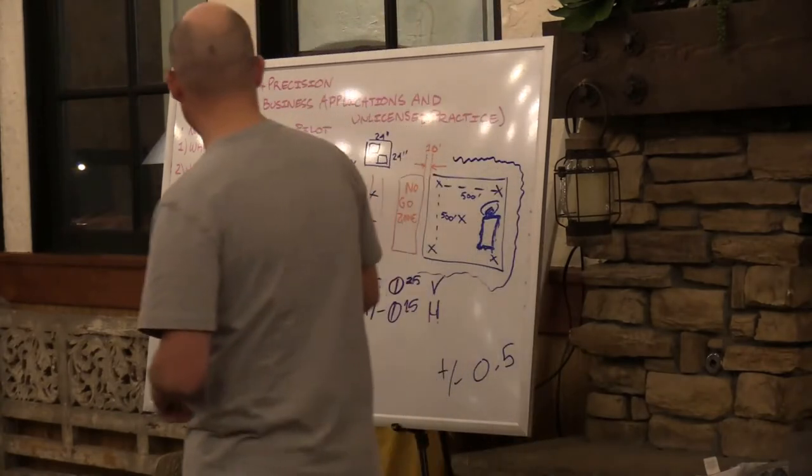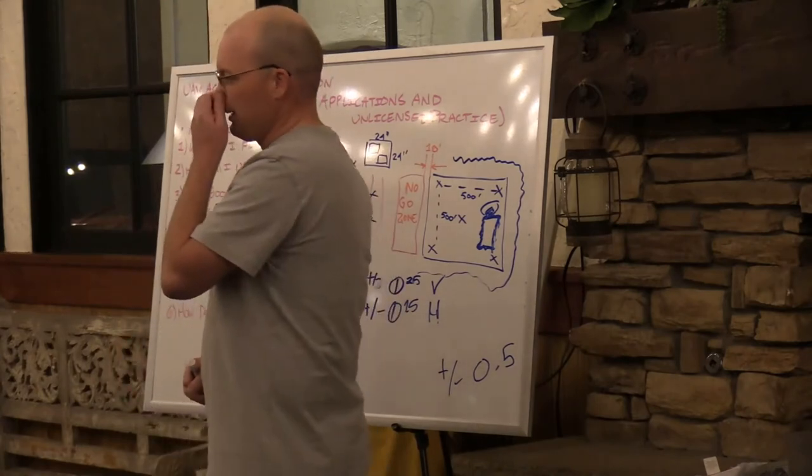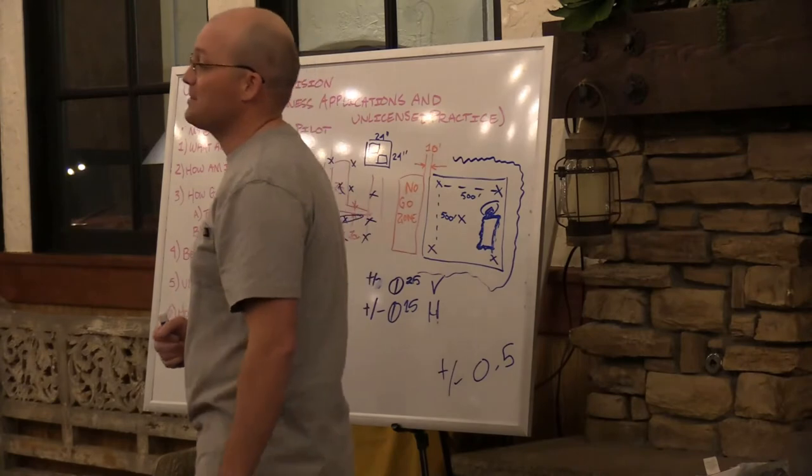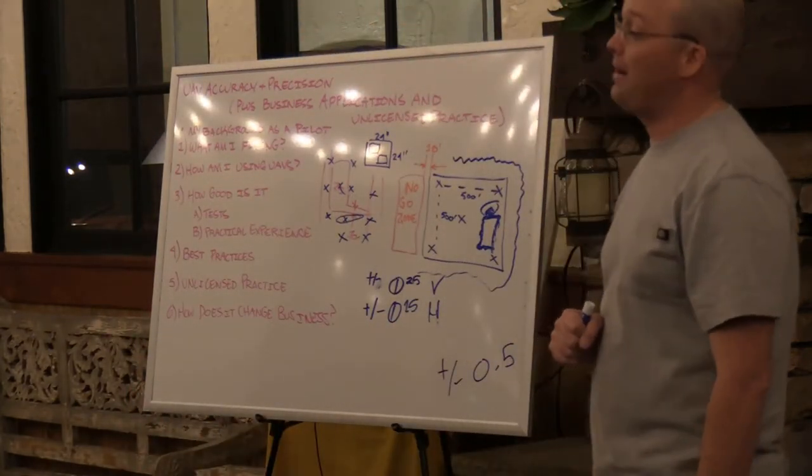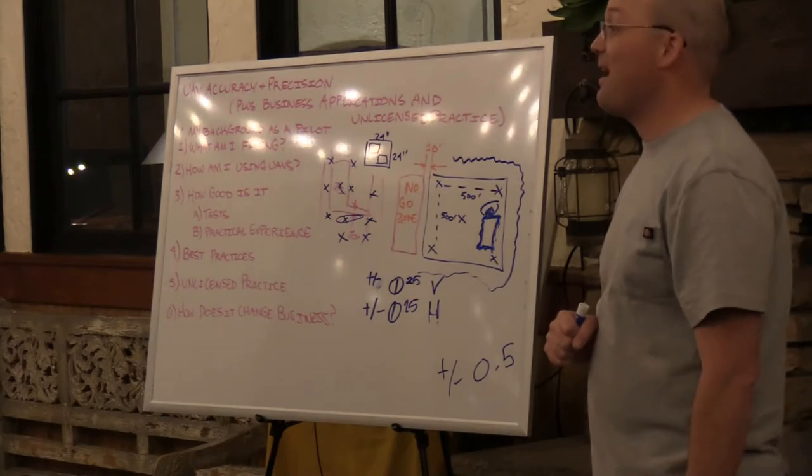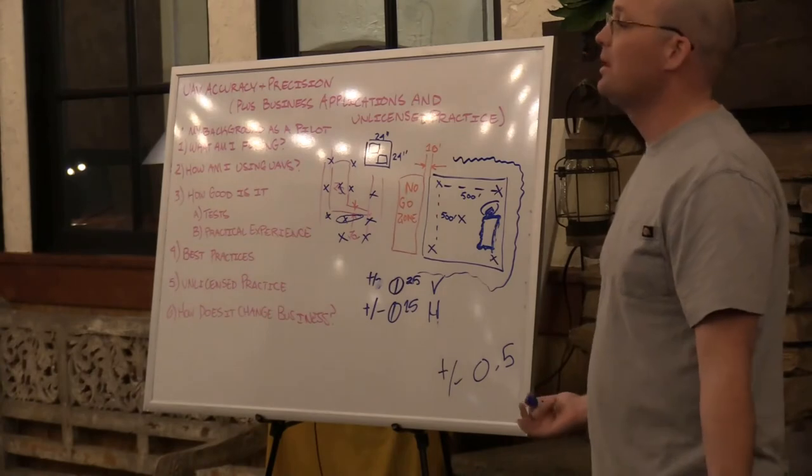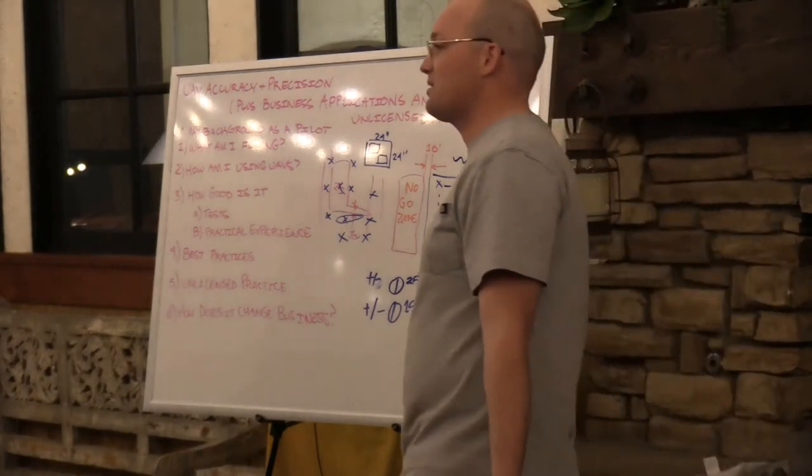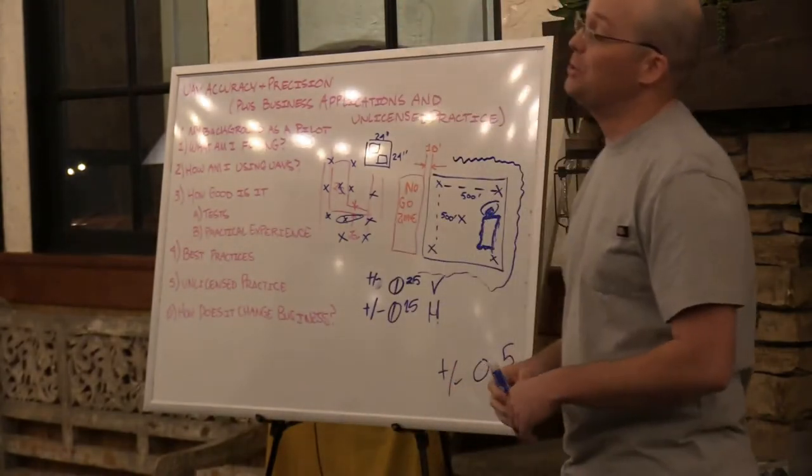Let's talk about unlicensed practice for a minute. It happens. It's going to happen more and more now because you can take this stuff out and fly it. In a state like California we have some recourse because topographic survey is covered under our LS Act. In my home state of Montana, that is not true. The only thing covered in Montana is boundary survey.